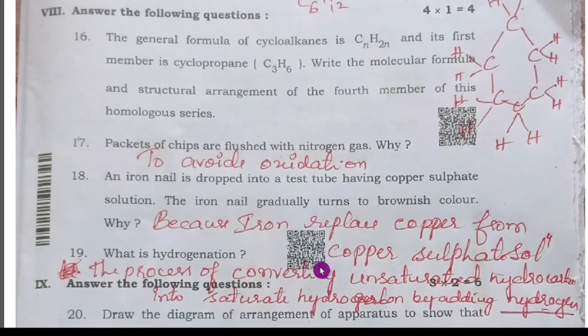Next, 16th question: the general formula of cycloalkanes is CNH2N. And the first member is, this is confusion and then you have to say that the first member is C3H6.